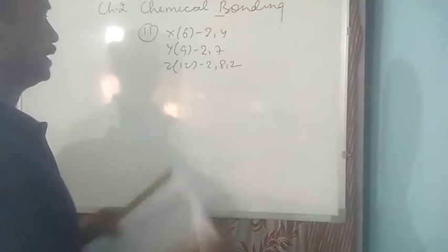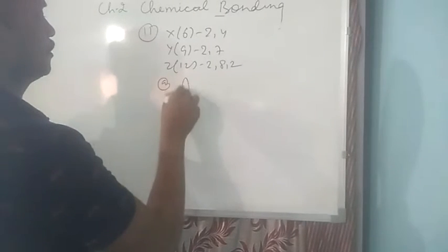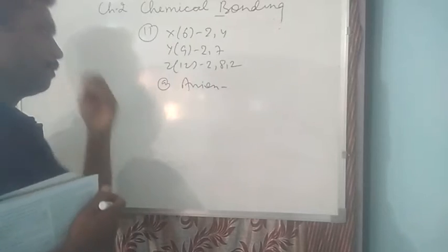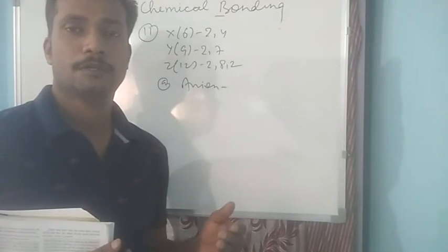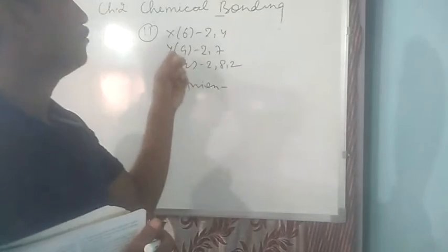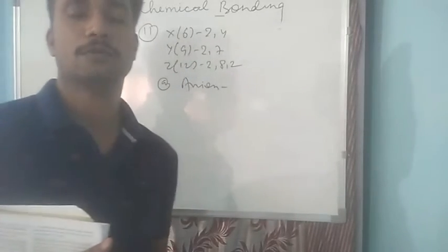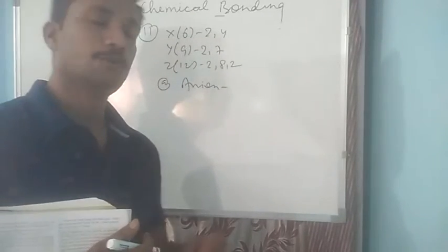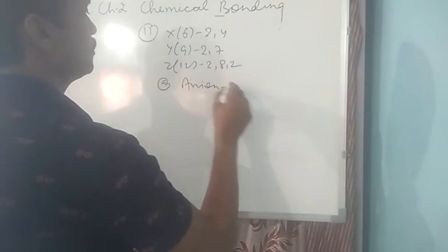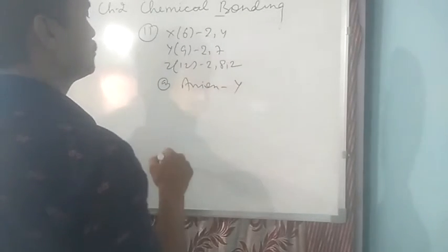Which one forms anion? So anion will be formed. Anion means negative charge, which will be formed only after gaining electron. So here you can see Y needs one electron to become stable or to complete its octet. So Y will form negative charge. So anion is Y.